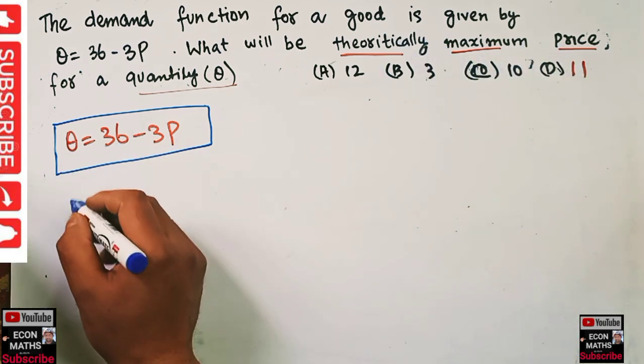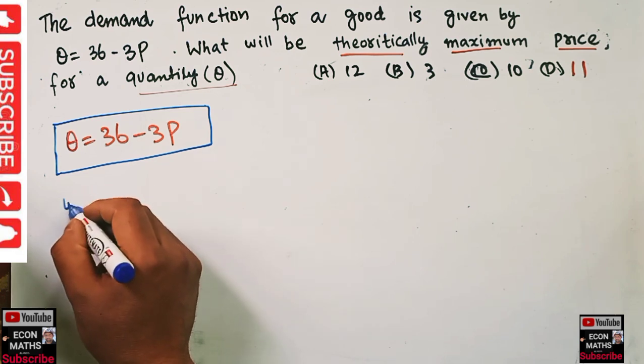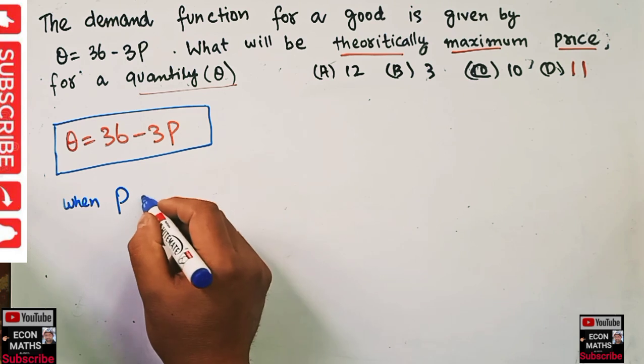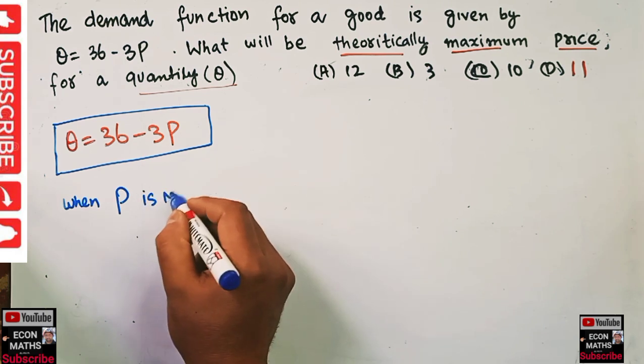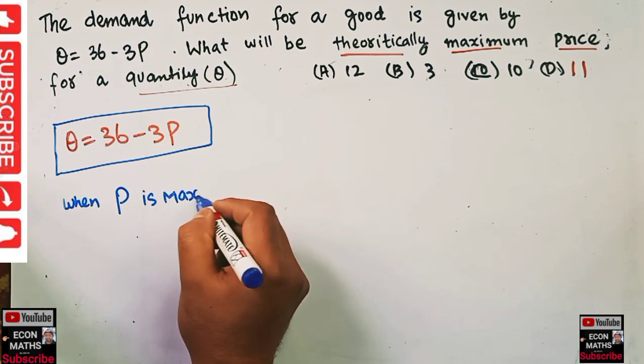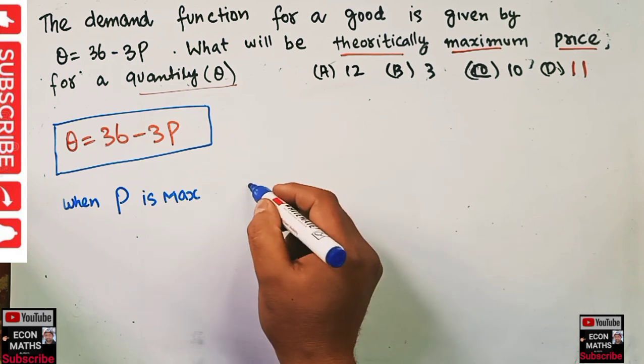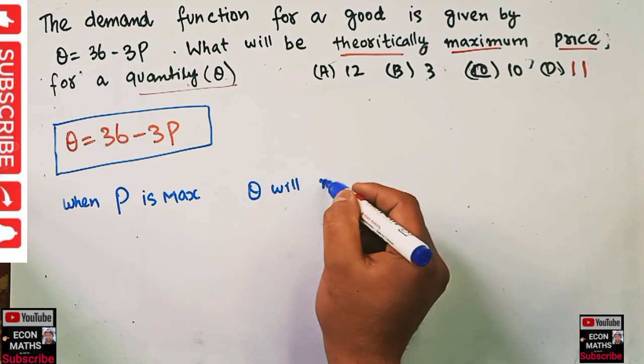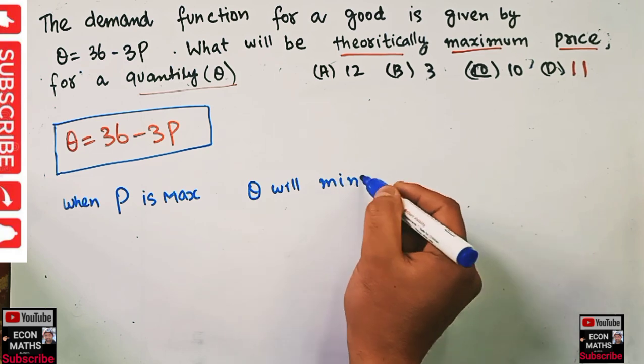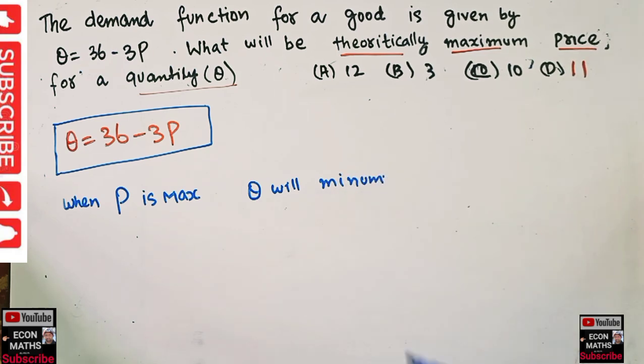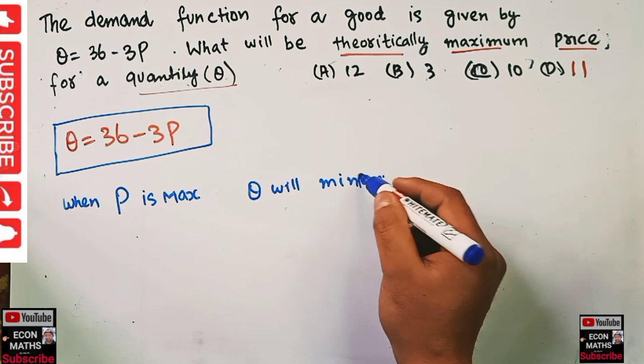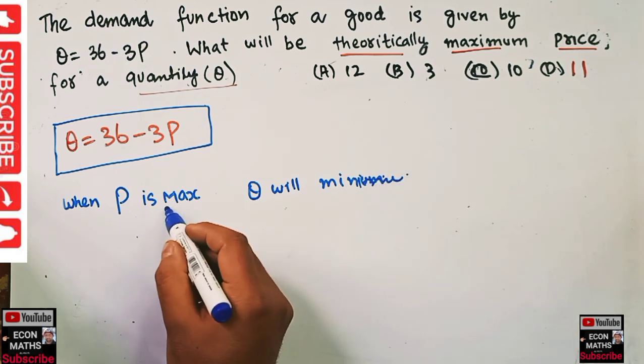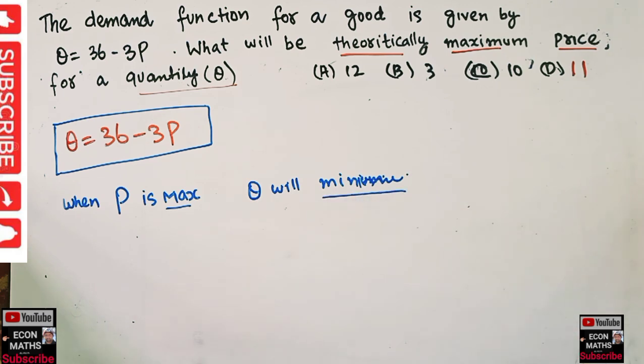We have to find out the maximum price. When price is maximum, quantity demanded will be minimum. Simple thing. When price is maximum, quantity will be minimum.